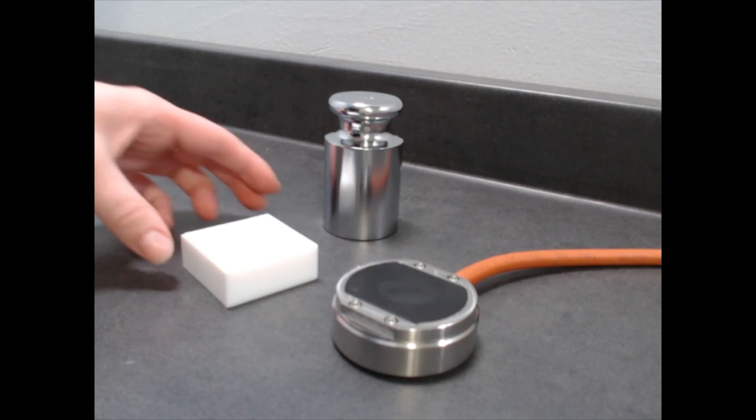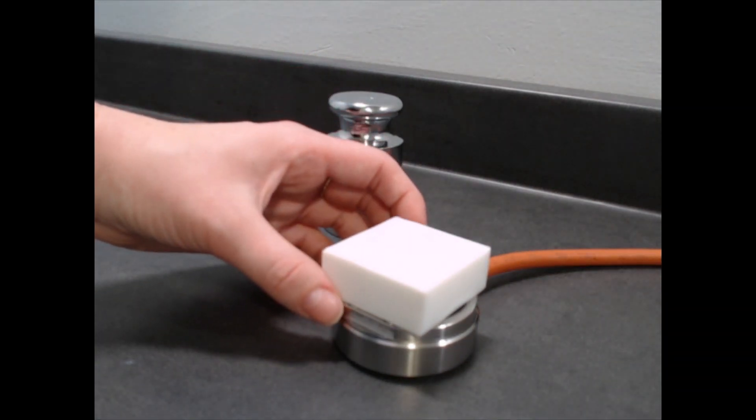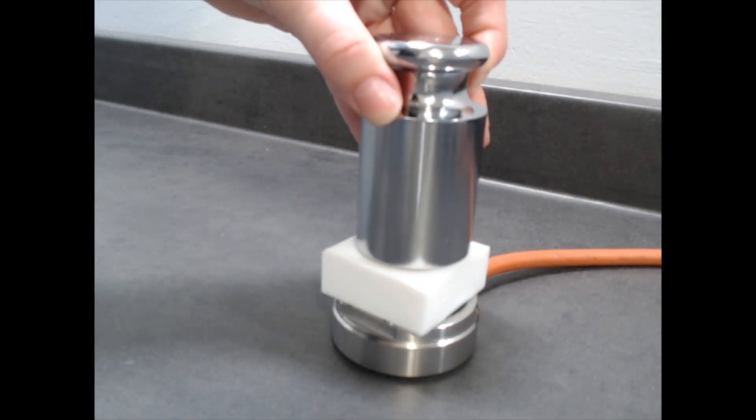To set up a measurement, you just have to take one piece of sample and place it on top of the sensor, making sure that it's centered, and then place a one kilogram weight on top of it to ensure good contact between the sample and sensor.